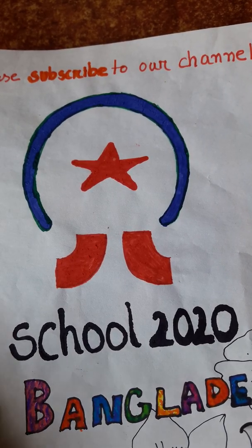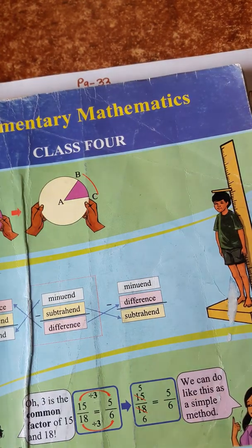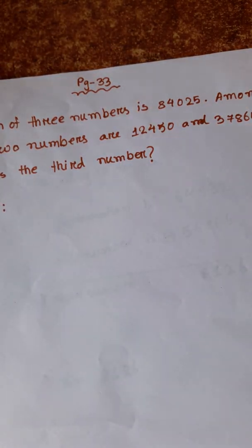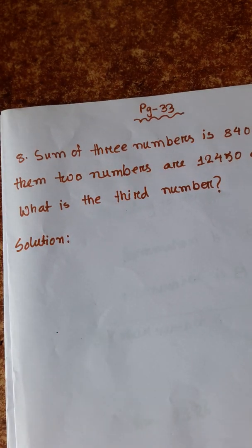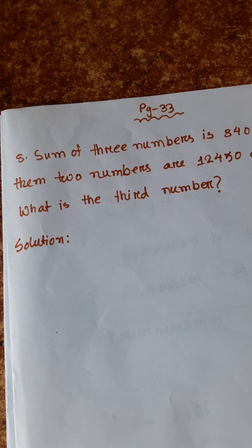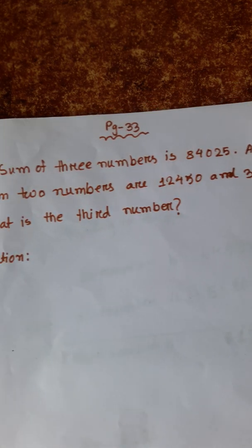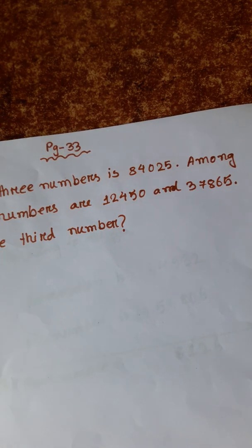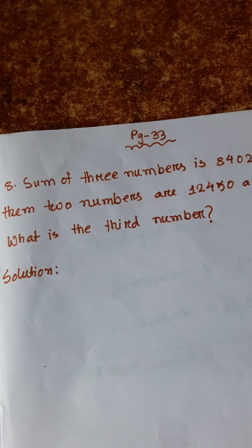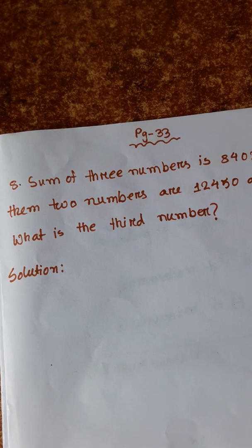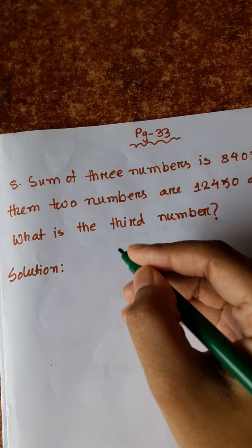Welcome to School 2020. Today we are going to Class 4A Elementary Mathematics and we are going to discuss the rest of the word problems. So our first number is problem 8. The question is: Sum of 3 numbers is 84,025. Among them, 2 numbers are 12,450 and 37,865. What is their third number?